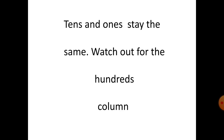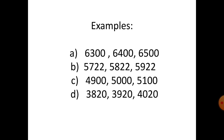Skip counting in hundreds — the tens and ones stay the same; watch out for the hundreds column. Example A: six thousand three hundred, plus one hundred — six thousand four hundred, plus one hundred — six thousand five hundred. Example B: five thousand seven hundred and twenty-two, five thousand eight hundred and twenty-two, and five thousand nine hundred and twenty-two.